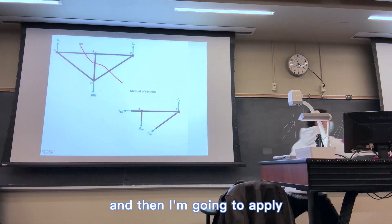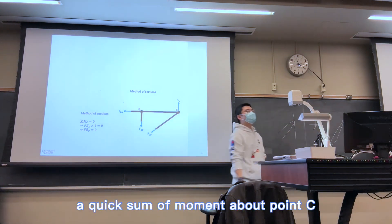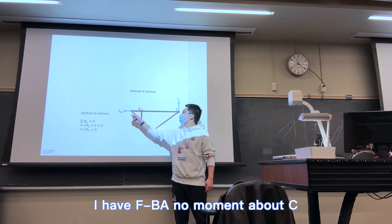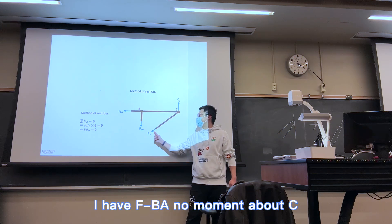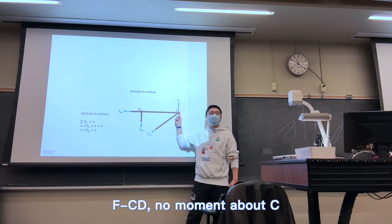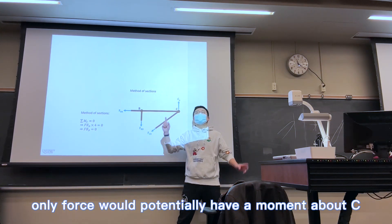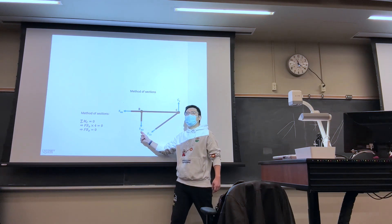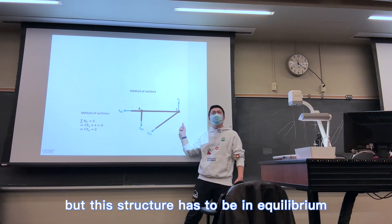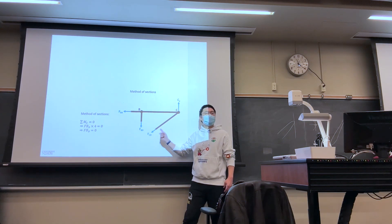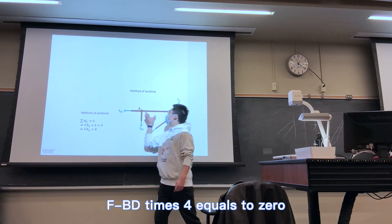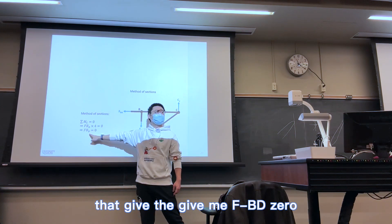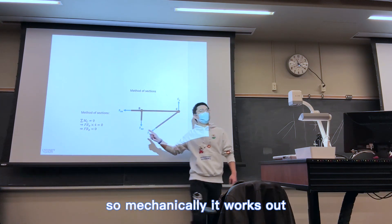And then I'm going to apply a quick sum of moment about point C. I have FBA, no moment about C. FCD, no moment about C. Only force would potentially have a moment about C is FBD. But this structure has to be in equilibrium. FBD times 4 equals to 0. That gives me FBD 0. So mechanically, it works out.